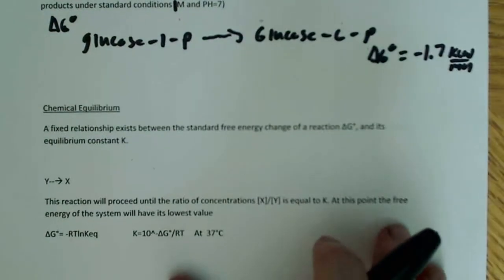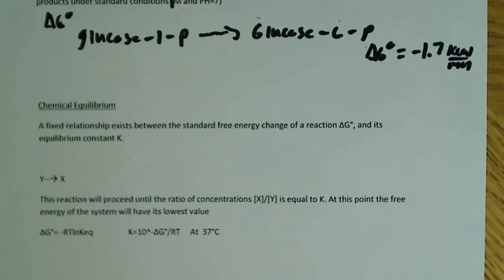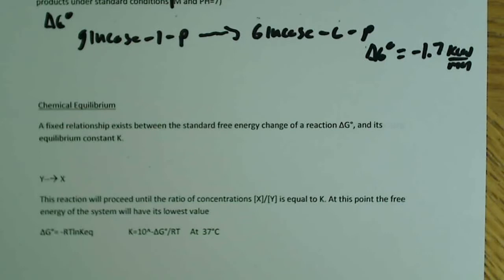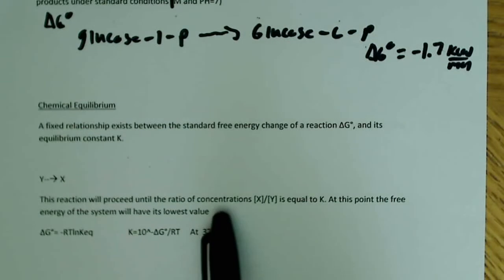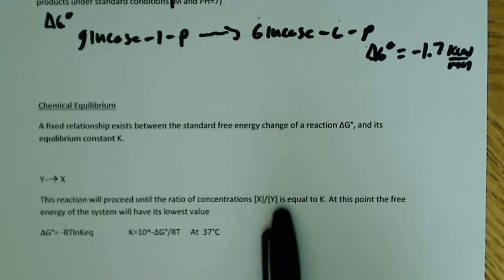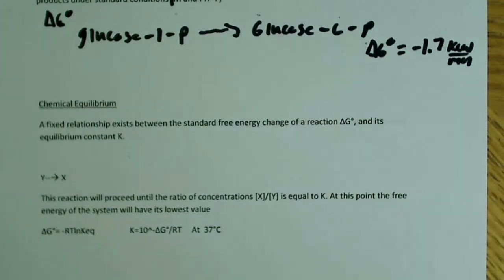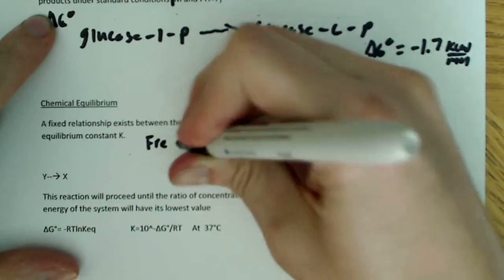Next: chemical equilibrium. A fixed relationship exists between the standard free energy change of a reaction, delta G prime, and its equilibrium constant K. For a reaction where Y converts to X, the reaction will proceed until the ratio of the concentration of product over reactant equals K. At this point, the free energy of the system will have its lowest possible value — that is the equilibrium point.